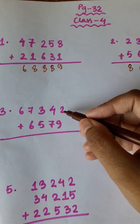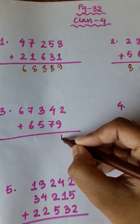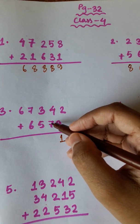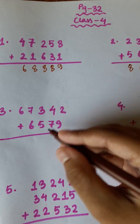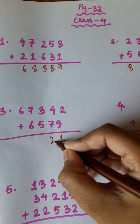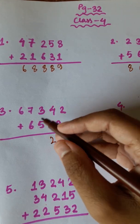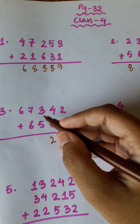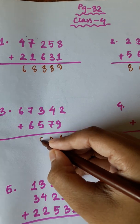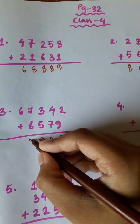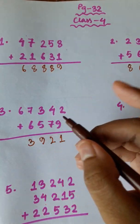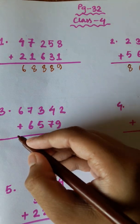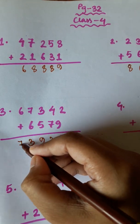Next: 9 plus 2 is 11, and 1. 7 and 1. 8 plus 4 is 12, 2. 5 plus 1, 6 plus 3 is 9. 7 plus 6 is 13, 3. 6 plus 1 is 7.